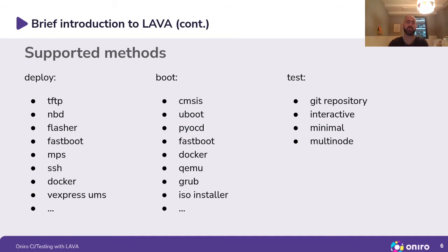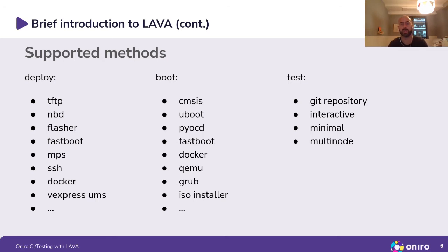There are many supported methods for all three steps. For the deploy step these include TFTP, NBD, Flasher, NFS, SSH, Docker, etc. For the boot step: regular U-Boot, PyOCD, Fastboot, Docker, QEMU, and others.